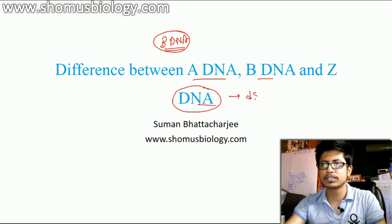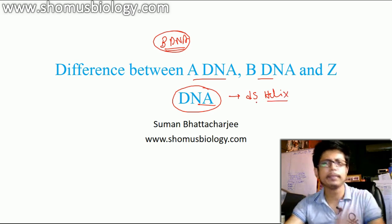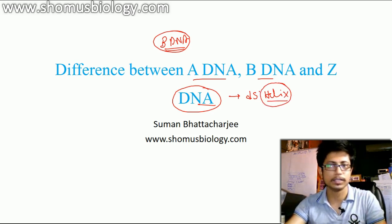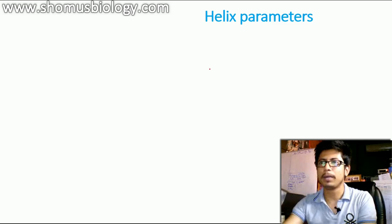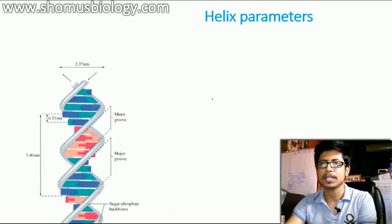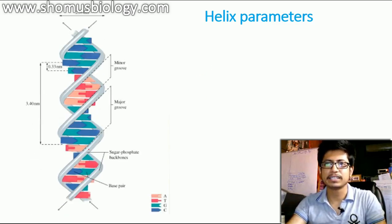DNA is a double stranded helix, we all know that. So we need to know some parameters related to helix first, then we can identify the difference between A, B and Z DNA. So let's talk about the helix parameters. We can start with some basic helix parameters.